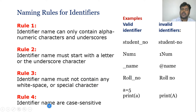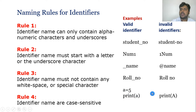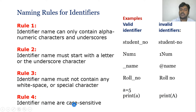Rule four: identifier names are case sensitive. For example, if I say a = 5 and print 'a', it will be accepted because I am using the same lowercase 'a'. But if I give a capital 'A', it will be considered invalid or a different variable, because lowercase 'a' and uppercase 'A' are different. So identifier names are case sensitive.